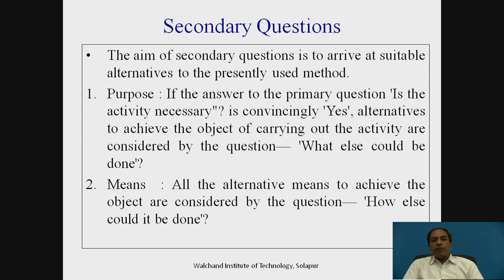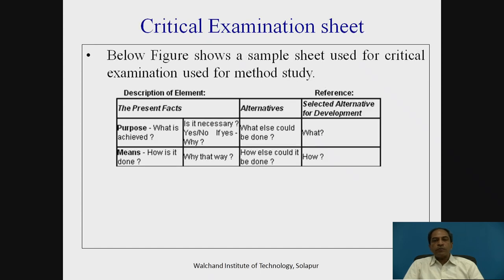For example in metrology, if we are checking a particular dimension using a vernier caliper, micrometer, or dial indicator simply because that has been the usual process, the secondary question 'How else can I measure?' may reveal that a plain go gauge, snap gauge, ring gauge, or plug gauge could be used instead — which can definitely reduce the time. Once the process is established, we can certainly think of these alternatives.